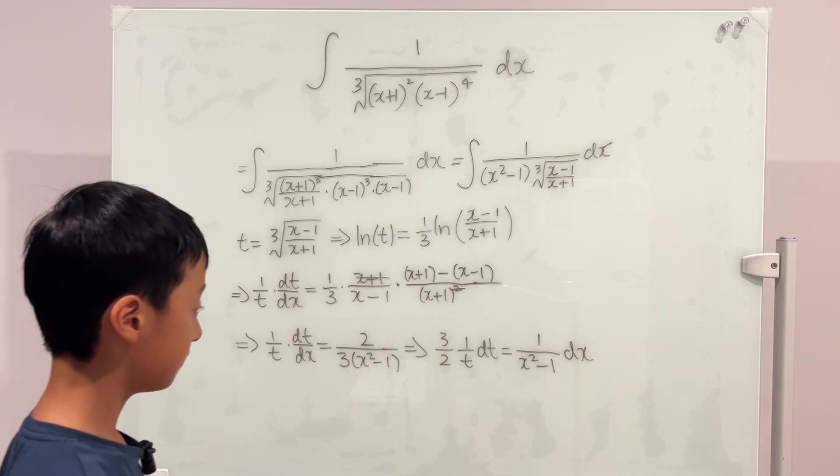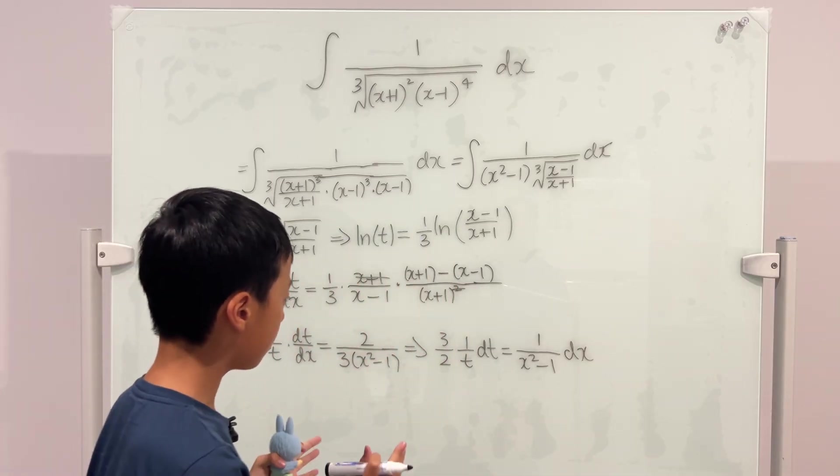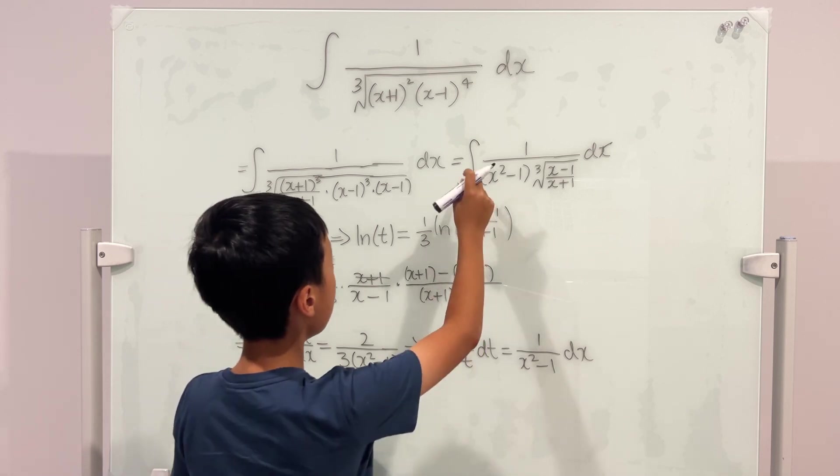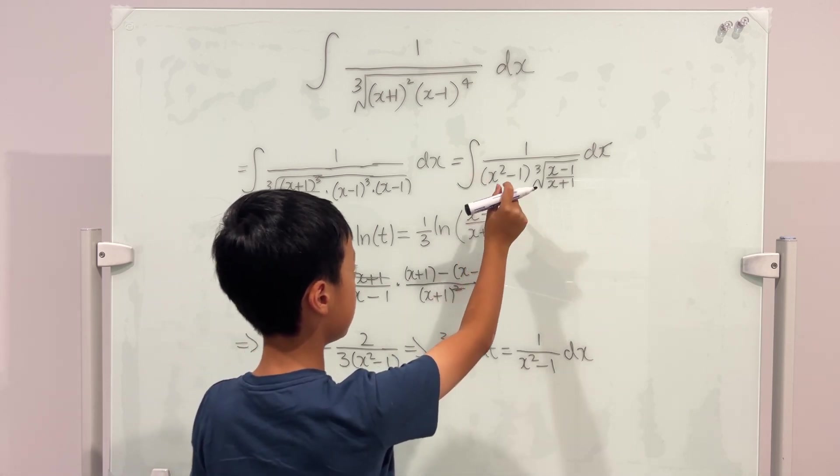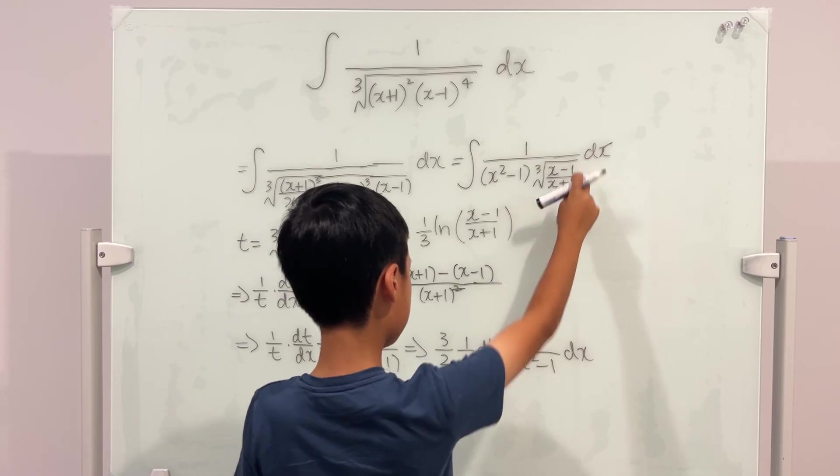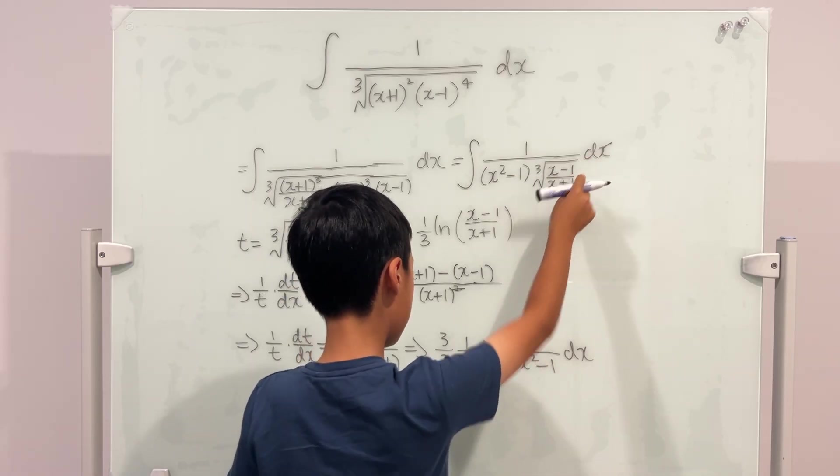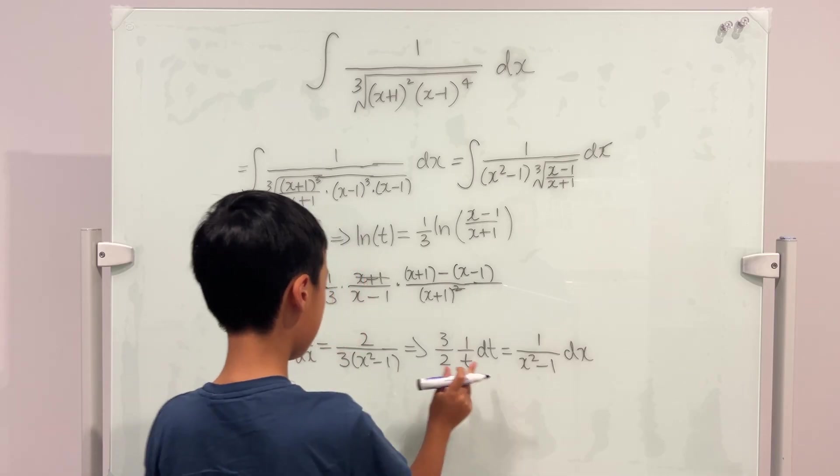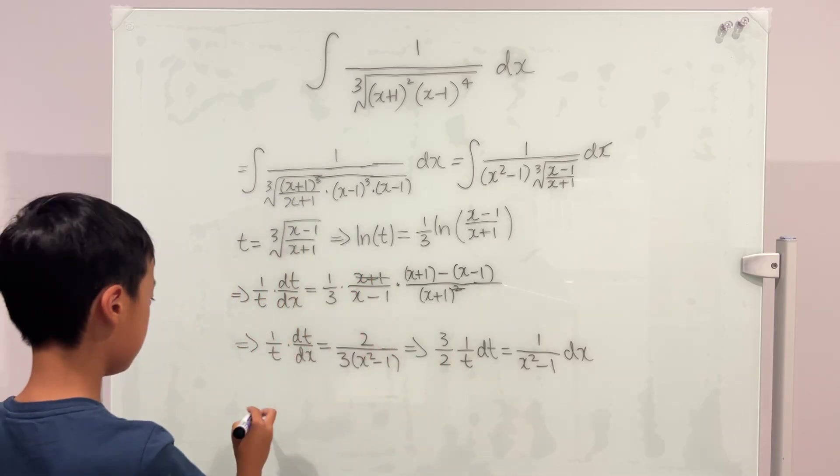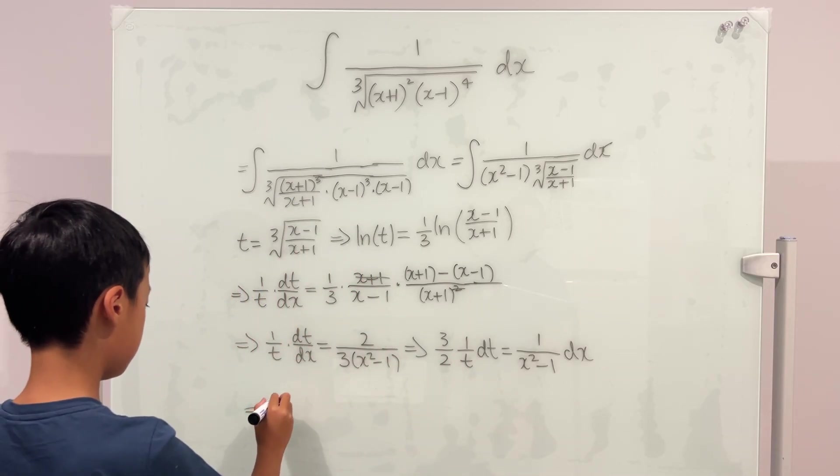Very nice. Now look, in our original integral, we see we have 1 over x squared minus 1 dx, which is that. So 1 over x squared minus 1 dx is just equal to this. So the integral becomes the integral of,